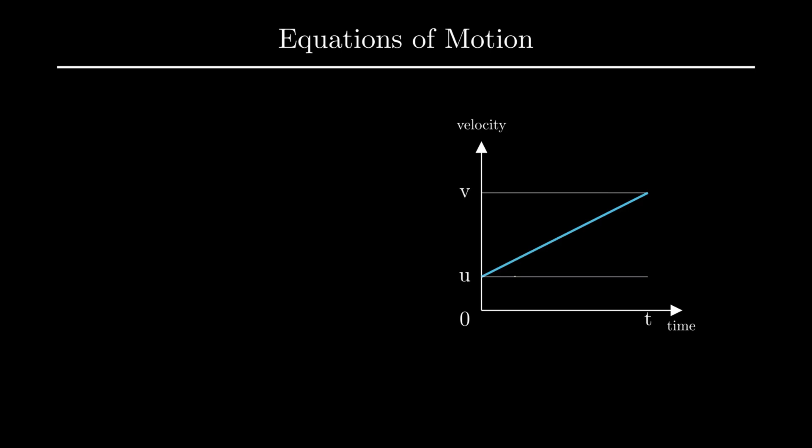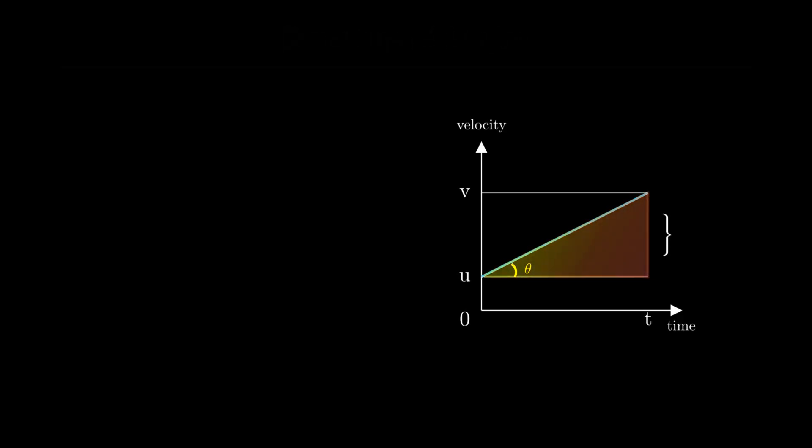We can now proceed to derive the first equation of motion. Acceleration can be found by calculating the inclination of the curve, which is given by tan θ in the triangle formed. Tan θ, as we all know, is perpendicular over base, which is (v - u) / t. Transposing, we get v = u + at as our first equation of motion.